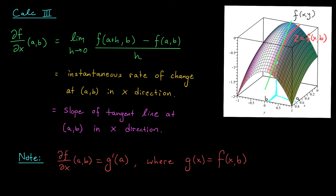Everything I've just told you about the derivative in the x-direction applies equally well to the derivative in the y-direction. Instead of plugging in y equals b to your function, you're going to plug in x equals a. That's going to give you the equation of this cross-section. By then taking the usual derivative from Calc 1, we get the slope of this tangent line in the y-direction, which we denote by partial f over partial y evaluated at (a, b) — the partial derivative with respect to y.